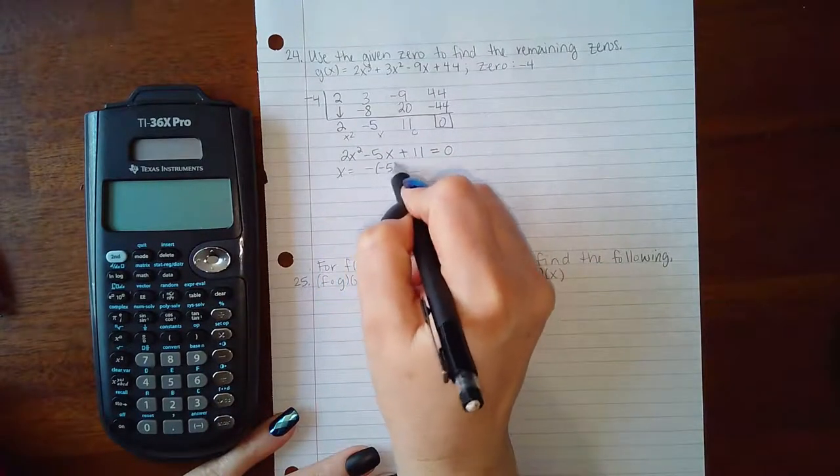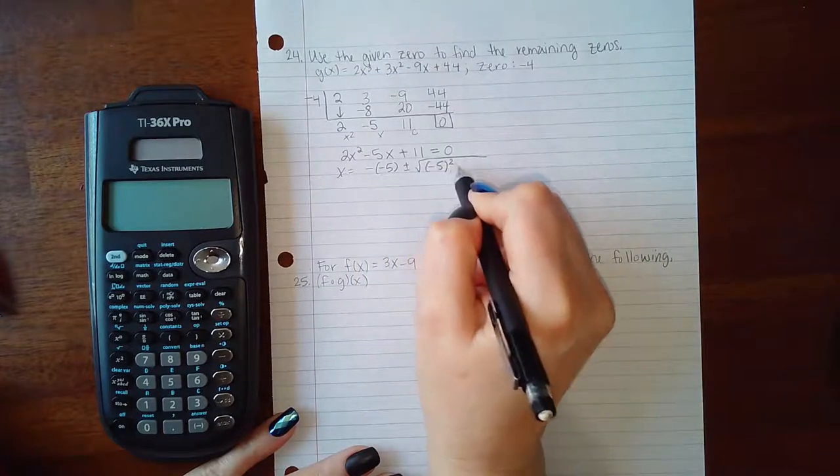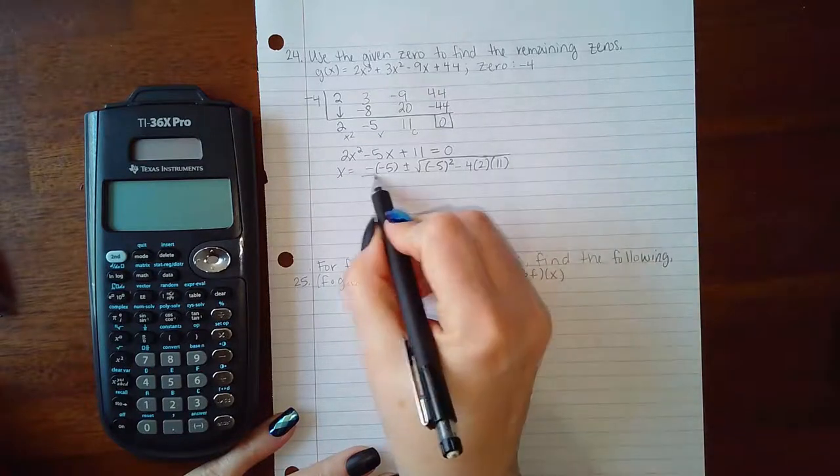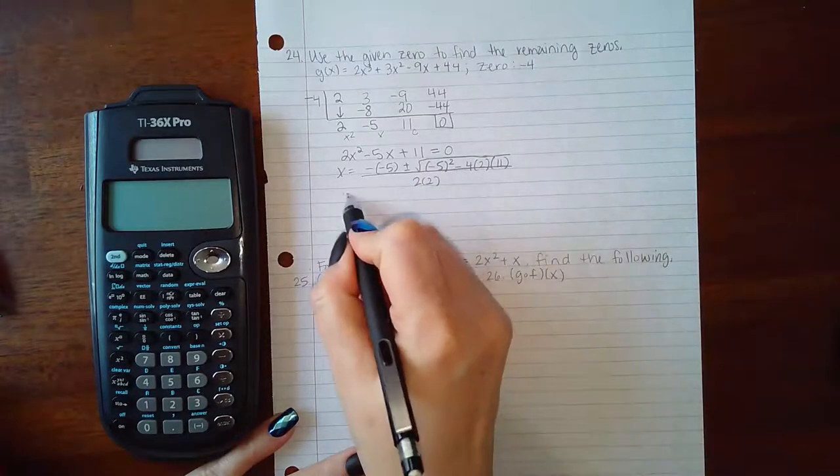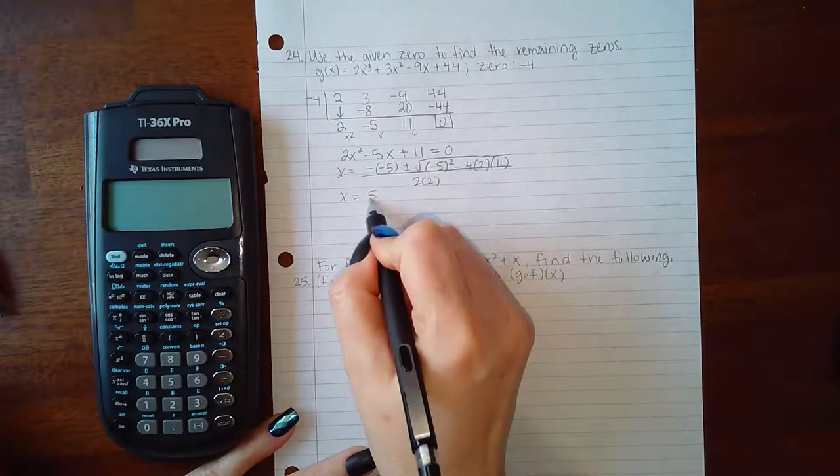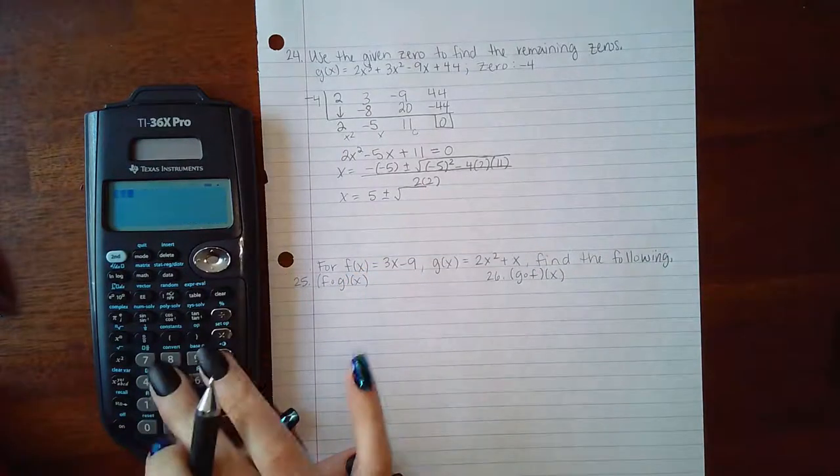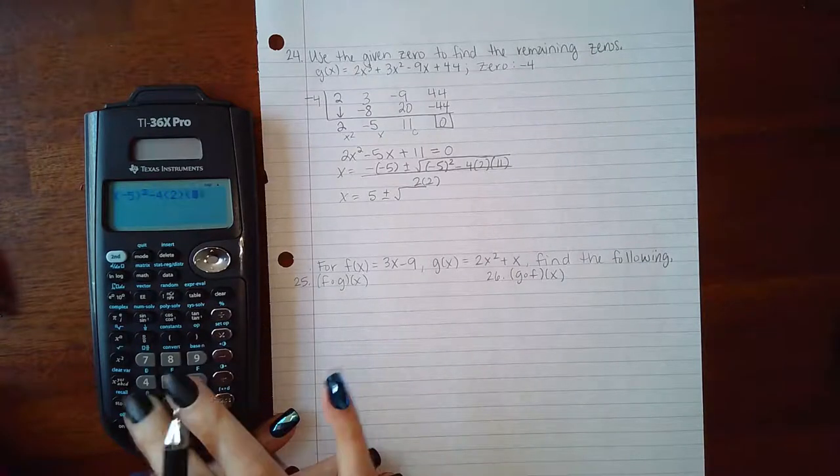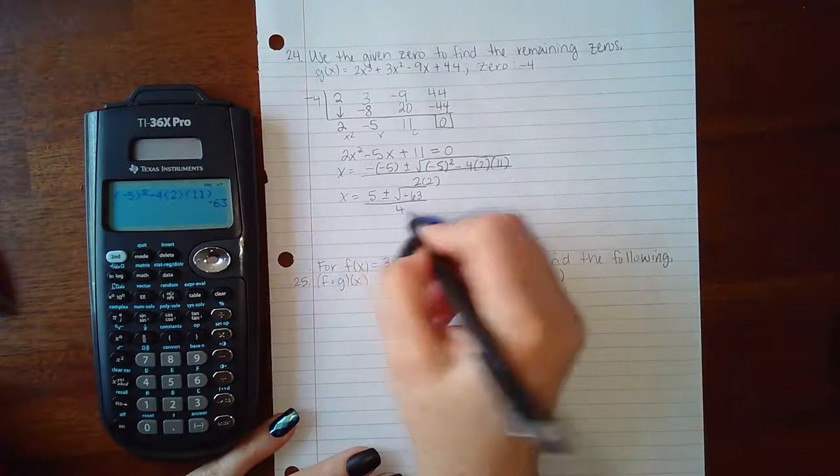Negative b plus or minus b squared minus 4 times a times c, the whole thing over 2 times a. So I'm going to get positive 5 plus or minus the square root of negative 5 squared minus 4 times 2 times 11. So I get negative square root of 63 over 4.